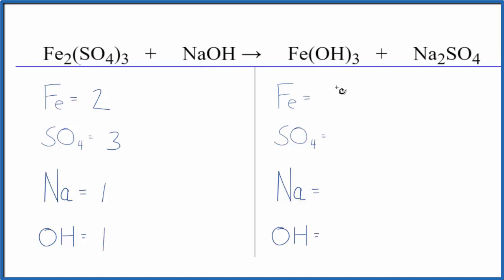On the product side, we have our one iron, one sulfate, two sodiums, and then three of these hydroxides. So that gives us a lot lower numbers. It makes it much easier to balance the equation.